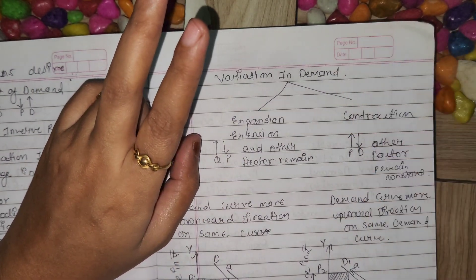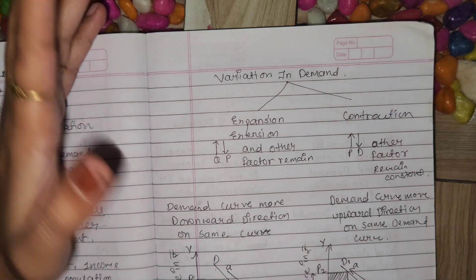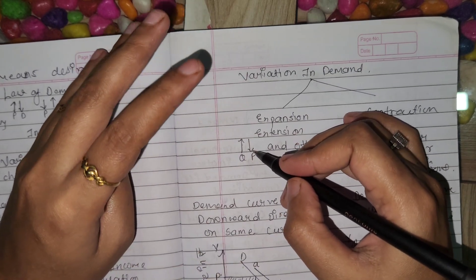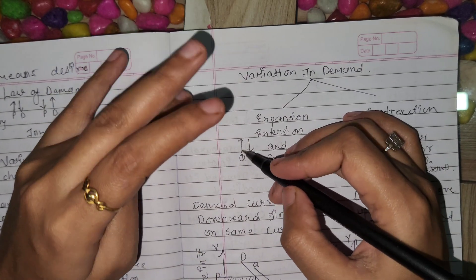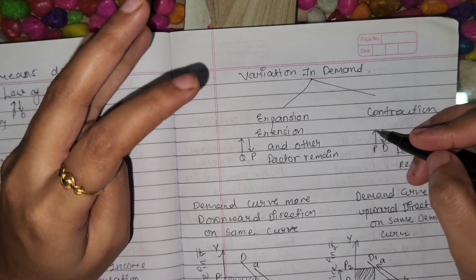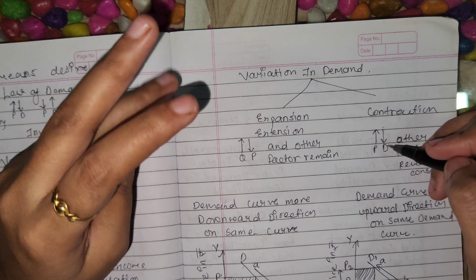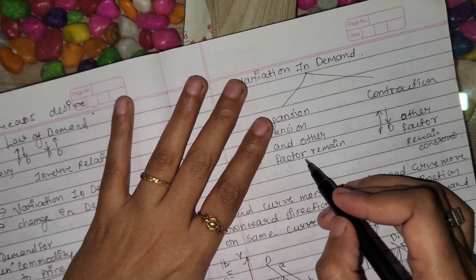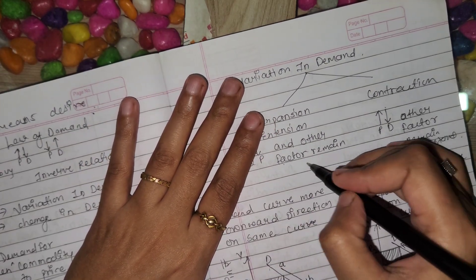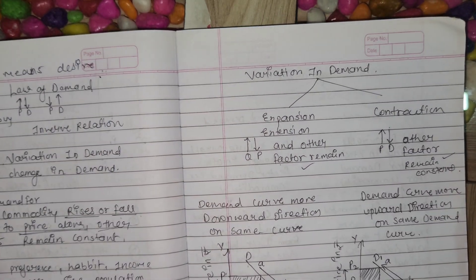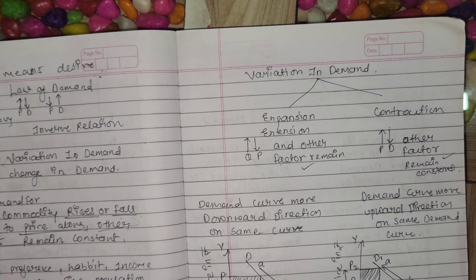Variation in demand has two types: number one is expansion, also known as extension, and number two is contraction. Expansion is when the price of a commodity falls and demand for the commodity rises. Contraction is when the price of a commodity rises and demand for the commodity falls. The common factor in both is that other factors remain constant — changes take place only due to price change or price fluctuation.